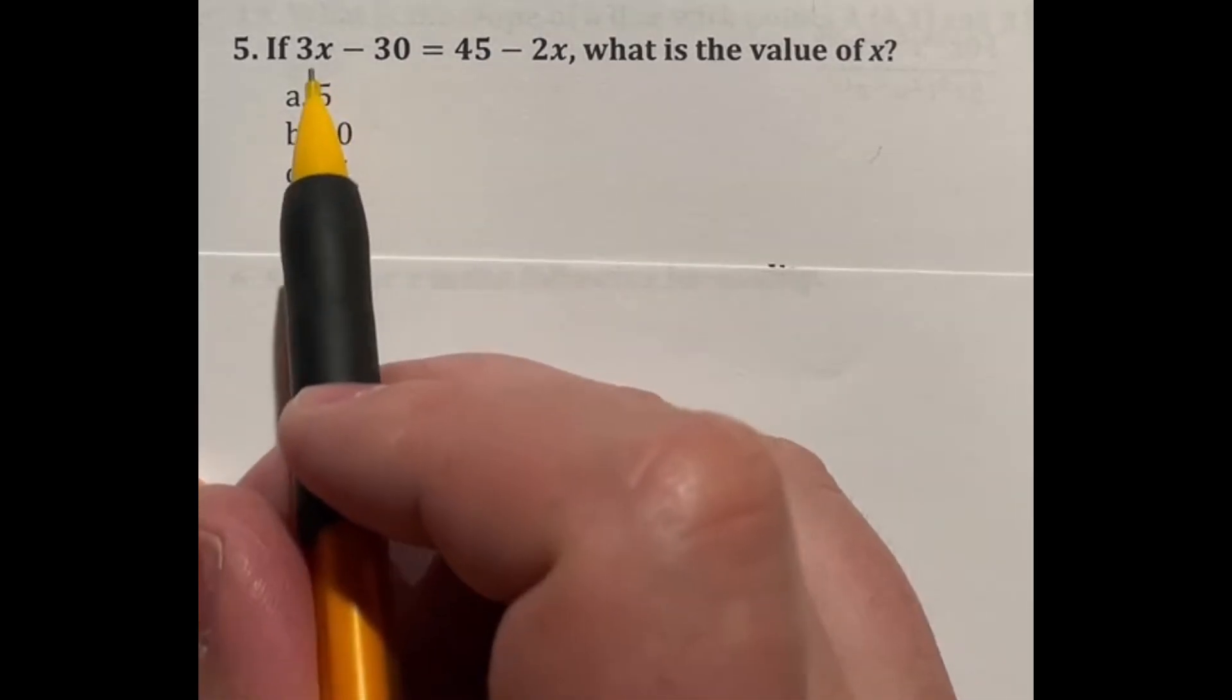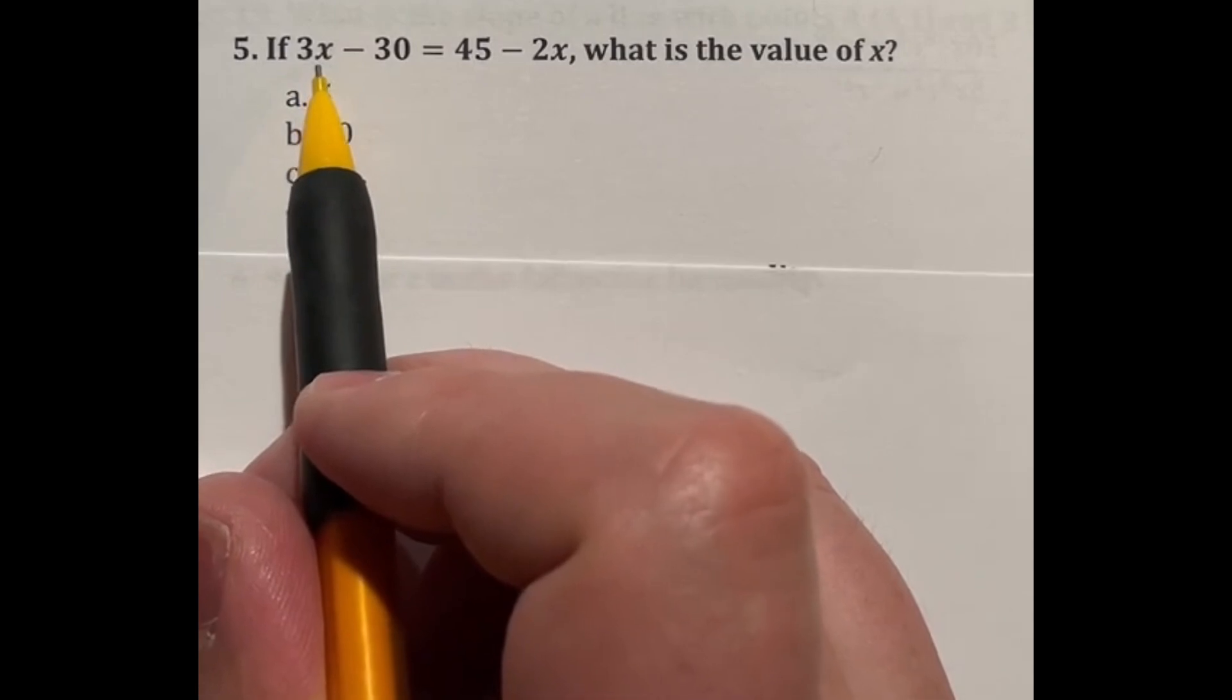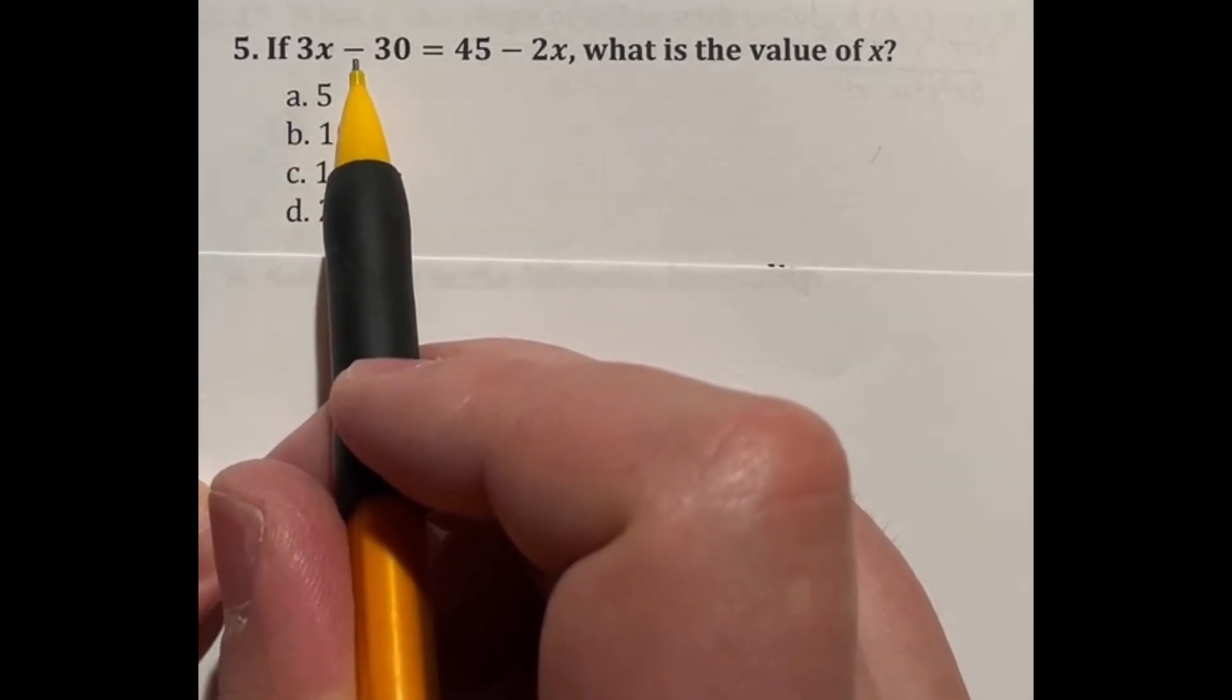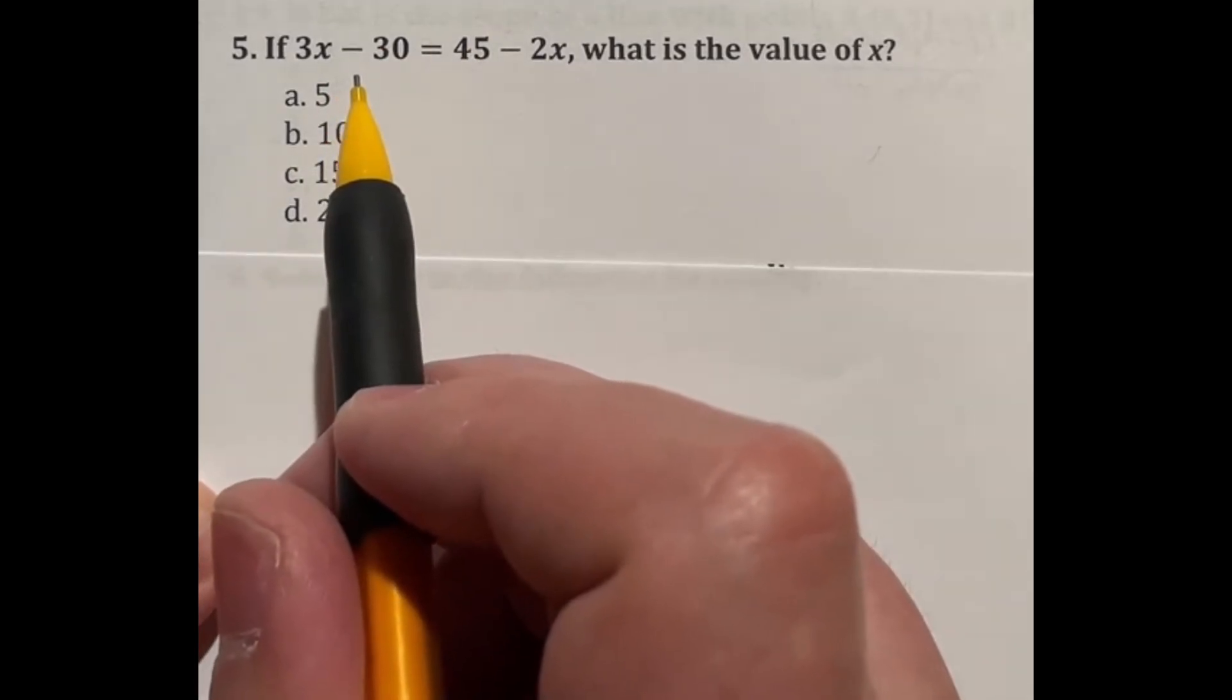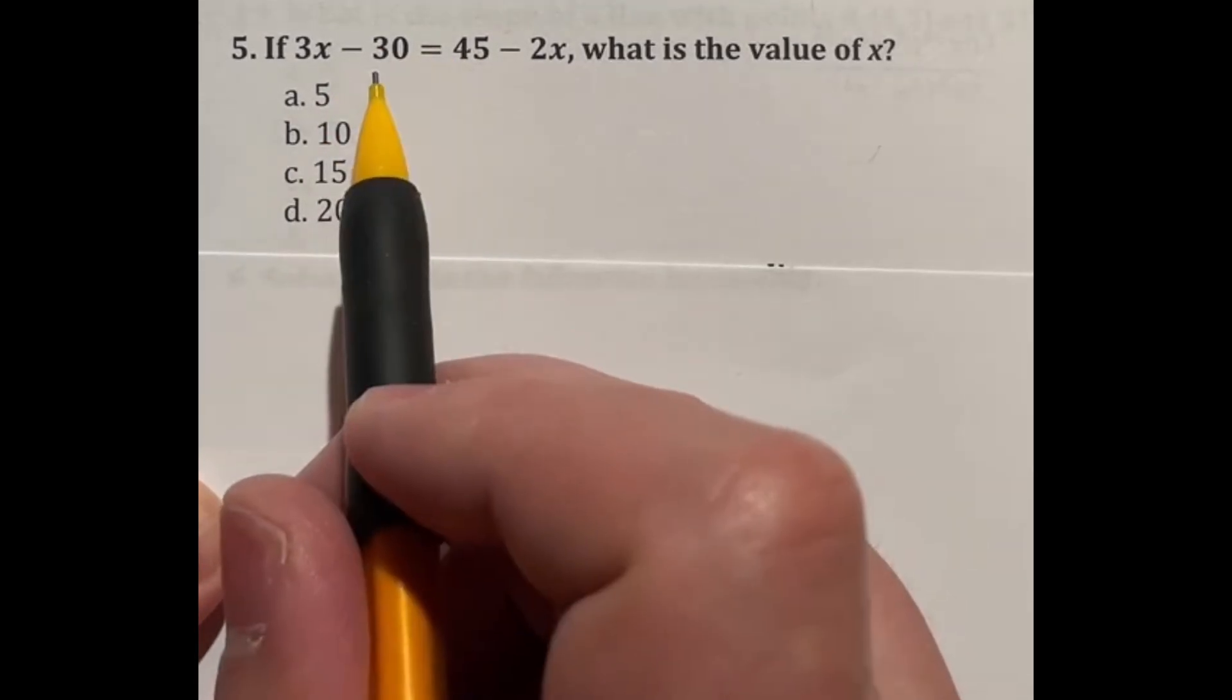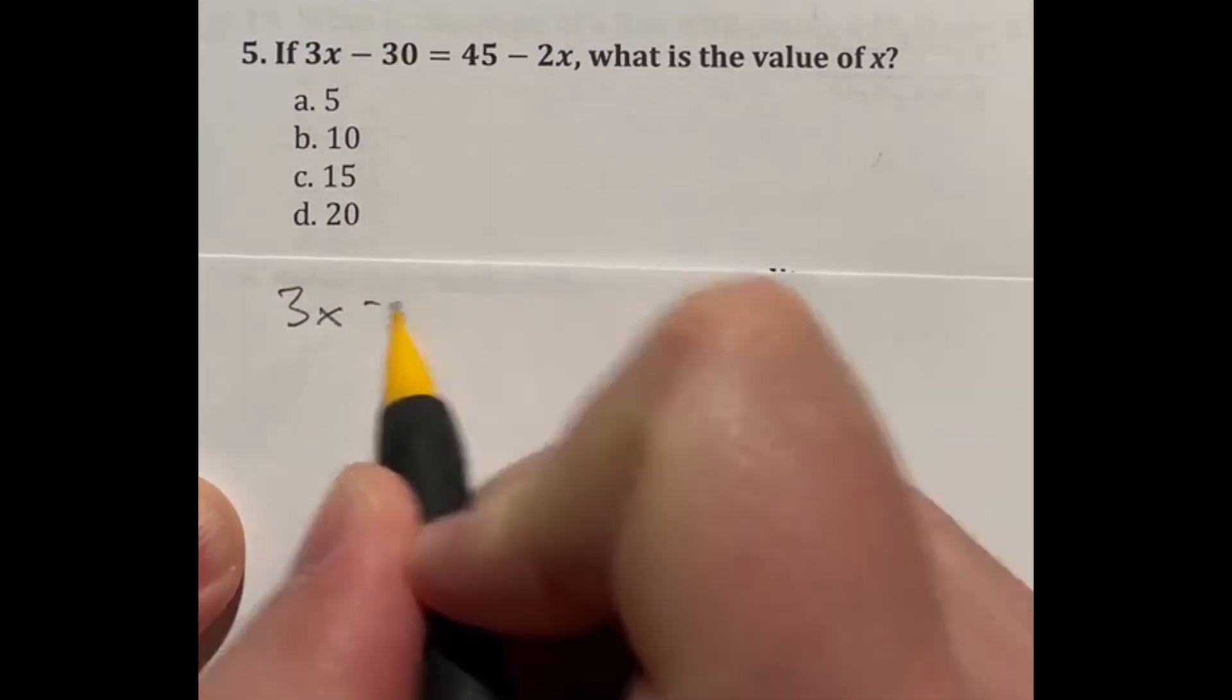Now remember, if you are multiplying, the opposite of doing that is dividing to move things to the other side. If you are subtracting, the opposite is adding. And likewise, if you are dividing, the opposite is multiplying. And if you are adding, the opposite is subtraction. So let's go ahead and take a look here. First thing I'm going to do is just rewrite right here so we have a bit more space.